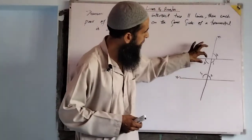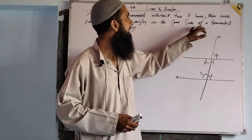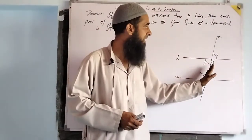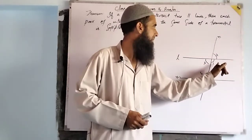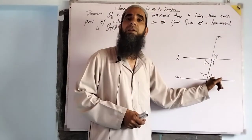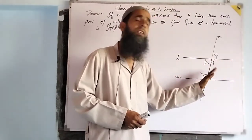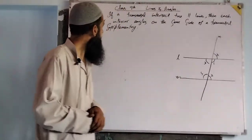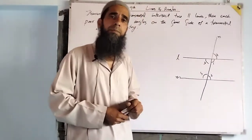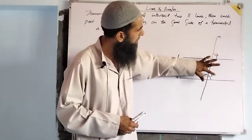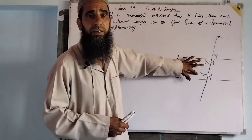We have four interior angles, but the given condition here is interior angles on the same side of the transversal. On one side of the transversal we have angle one and angle two; on the same side we also have angle three and angle four. These pairs are supplementary — that is, angle one plus angle two equals 180, or angle three plus angle four equals 180.